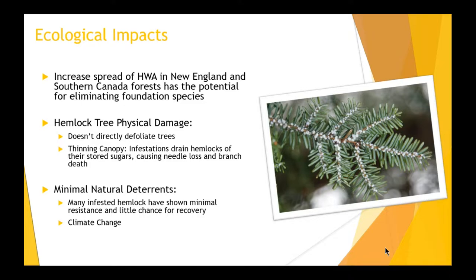When an infestation is present on a hemlock tree, there are some very distinct visual characteristics of the decline. While the hemlock woolly adelgid does not directly defoliate the hemlock needles, colonies bring about a progressive needle loss and branch death by draining the hemlocks of their stored sugars. Some research has determined that given extreme drought conditions, mortality could be around 5 to 15 years if infested.